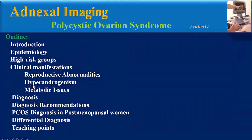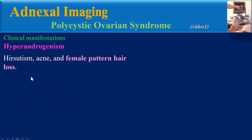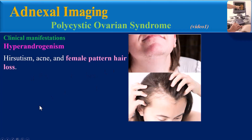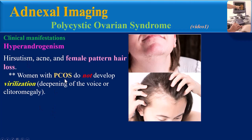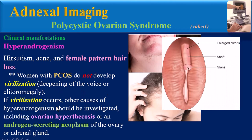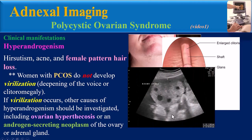Clinical manifestations relative to hyperandrogenism include hirsutism, acne, and female pattern hair loss. Importantly, women with PCOS do not develop virilization with clinical findings of deepening of voice or clitoromegaly. If virilization occurs, other causes of hyperandrogenism should be investigated.